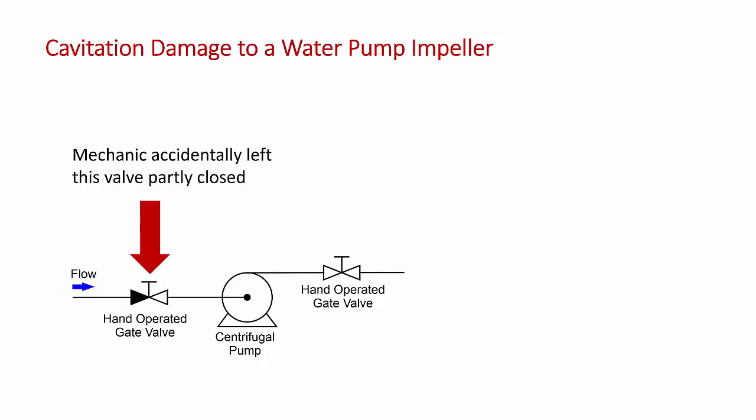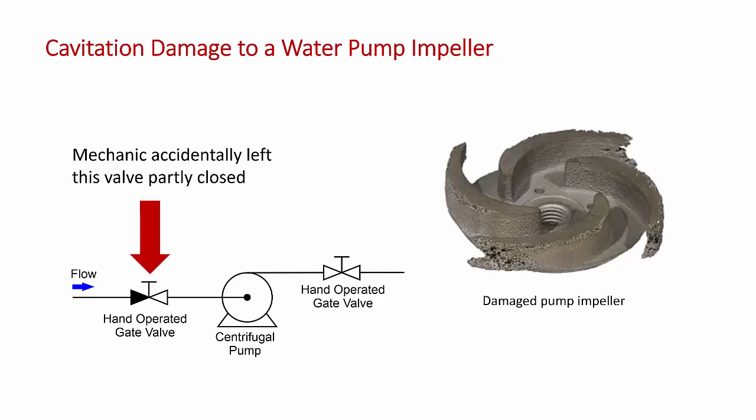But after the pump was repaired, the mechanic was in a rush, I guess, and he didn't completely open the upstream valve on the suction side of the pump. So when the pump was turned on, the pressure loss across this not completely open valve caused intense cavitation. Over the course of the next few weeks, vapor bubbles were drawn into the centrifugal pump and destroyed the pump's impeller.